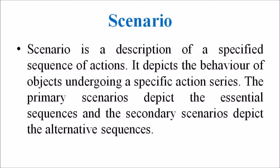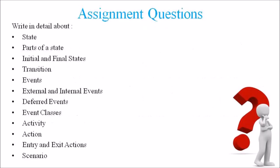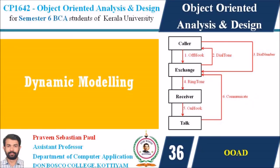In this lecture, we discussed object-oriented dynamic modeling: its different principles and terms. The assignment question is: write in detail about state, parts of a state, initial and final state, transition, events, external and internal events, deferred events, event classes, activity, action, entry and exit action, and scenario. In the upcoming lecture, we will discuss the diagrams for dynamic modeling. See you soon — goodbye, thank you and all the best.